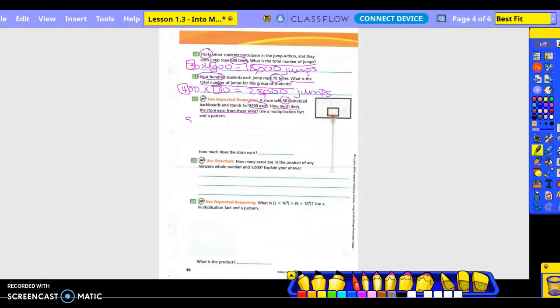We're going to do 50 times 700. So what they want us to do, though, is they want us to do repeated reasoning. So we would do what? 5 times 7. No, 50 times 700. 5 times 7 times what?